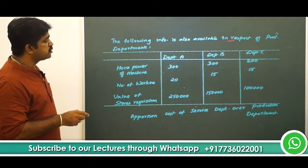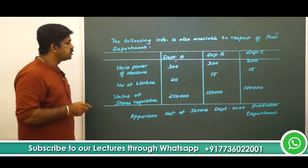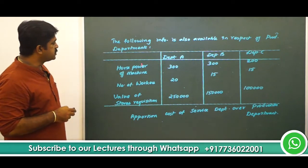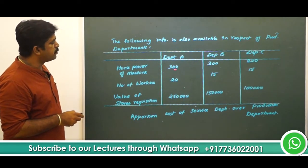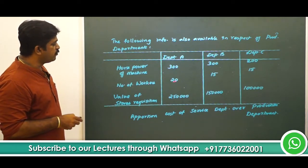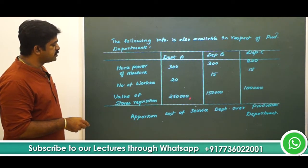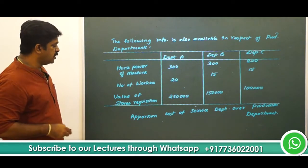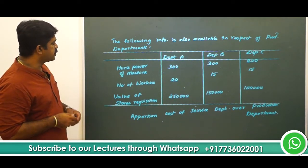The following information is also available in respect of the production departments A, B, and C. Horsepower of machine: department A — 300, B — 300, C — 200. Number of workers: 20, 15, 15. Value of stores requisition: 2,50,000; 1,50,000; 1,00,000. You have to apportion the cost of the service department over the production departments.